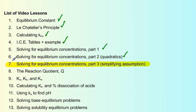Okay, tutorial number seven. We're going to look at a problem, an equilibrium problem, where we can use a simplifying assumption to help us solve for X.